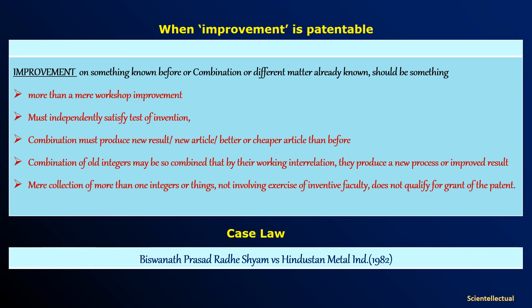When can an improvement be considered patentable? Improvement on something known before, or a combination of different matter already known, should be something more than a mere workshop improvement. It must independently satisfy the test of invention. A combination must produce a new result, a new article, or a better or cheaper article than before. A combination of old integers may also be combined such that by their working interrelation they produce a new process or improved result. Mere collection of more than one integer, not involving the exercise of inventive faculty, does not qualify for the grant of a patent.